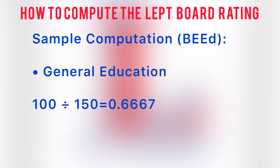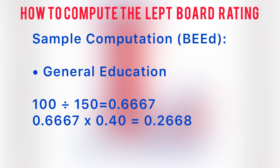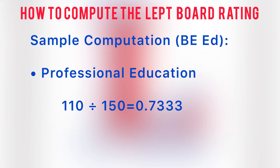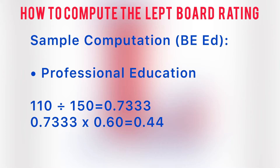For general education: 100 divided by 150 equals 0.667. Multiply it with 0.40 and get 0.2668. For professional education: 110 divided by 150 equals 0.7333. Multiply this with 0.60 and get 0.44.